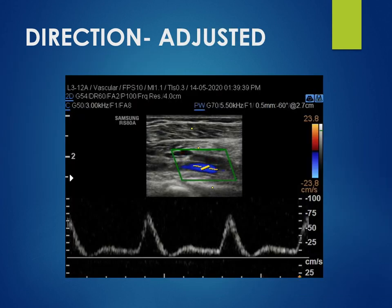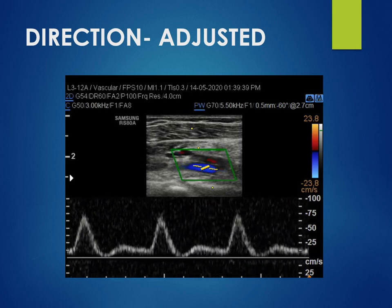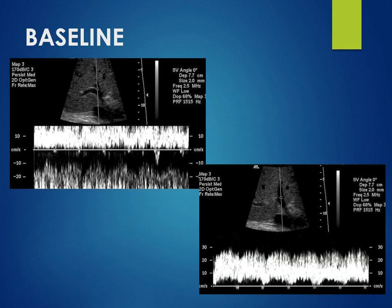The direction of flow in the spectrum can be adjusted. Here on the colour scale, blue is the direction away from the probe. But we have inverted the spectral Doppler so that we can see the spectrum above the baseline. Whenever we see the spectrum going above the available window, we should adjust the baseline so that we can see the spectrum very nicely.